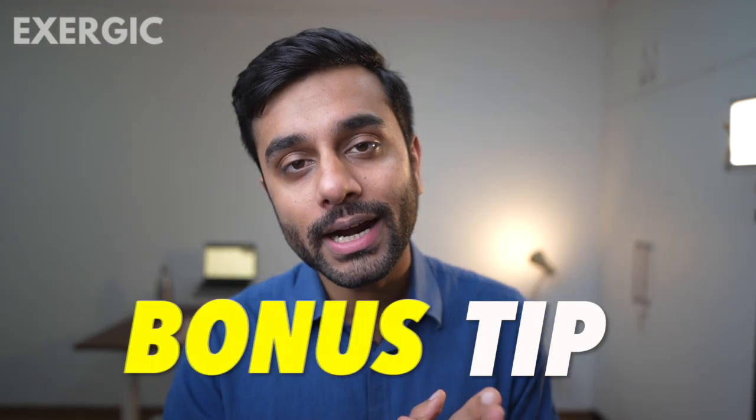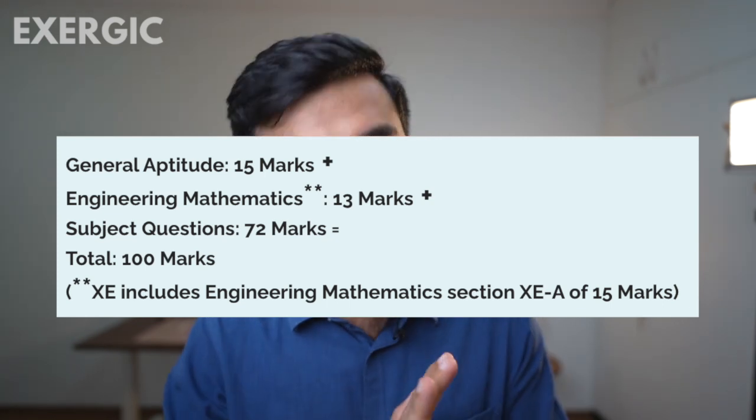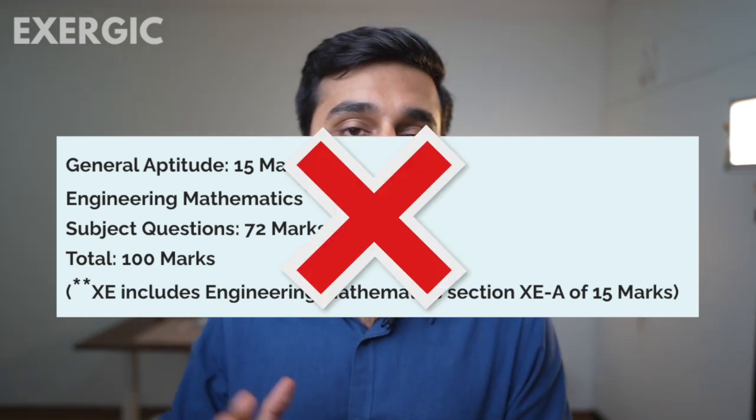Here is a bonus tip regarding the GATE syllabus. Many students think that the weightage of Mathematics is exactly 13 marks, which is not true. If you check some recent GATE papers, in some sets the weightage has been lesser than 13 — around 11 marks of Maths came in one set. So although GATE has officially notified that the weightage will be 13 for Maths, in practice it gets lesser than that as well.